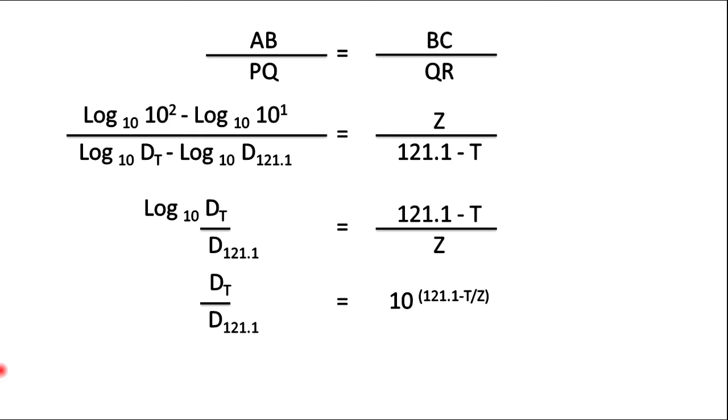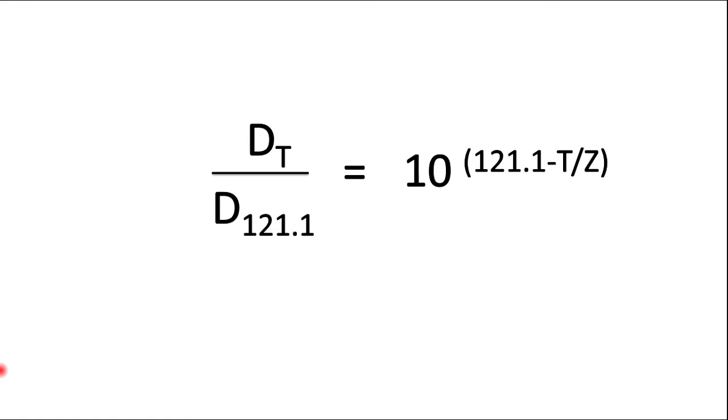So you can write ME divided by PQ equals BC divided by QR, and you can write this as log 10 to the power 2 minus log 10 to the power 1 divided by log DT minus log D 121.1. This DT means thermal reduction time at a given specific temperature. Then you can get the equation like this using your mathematics knowledge.